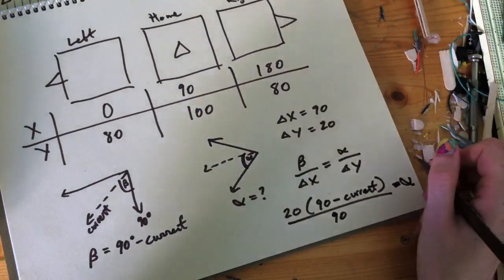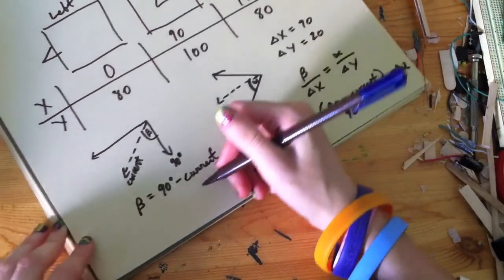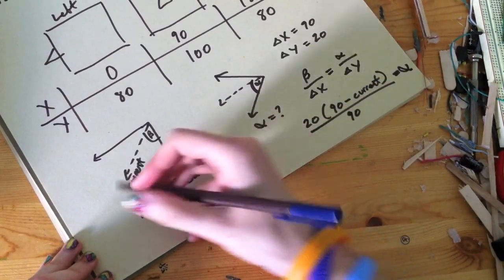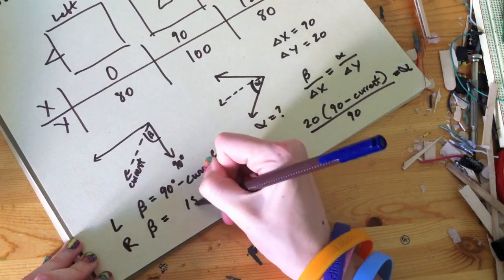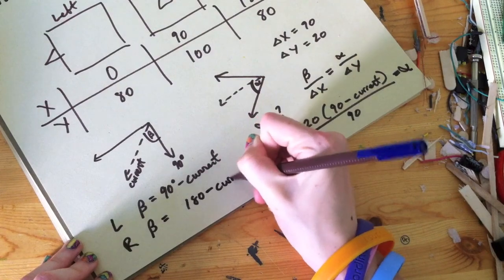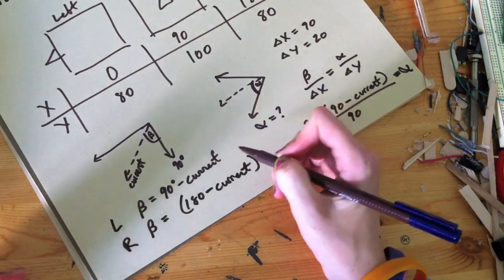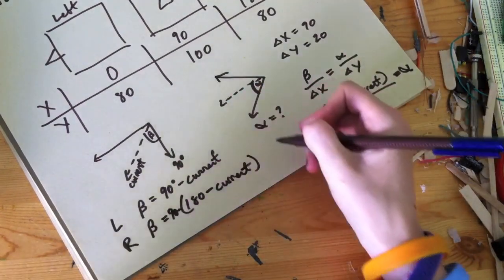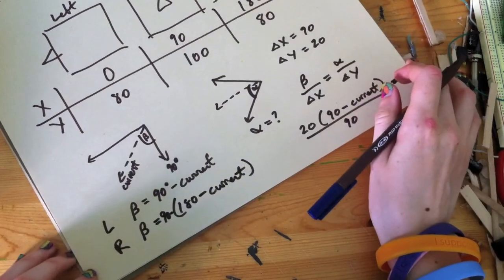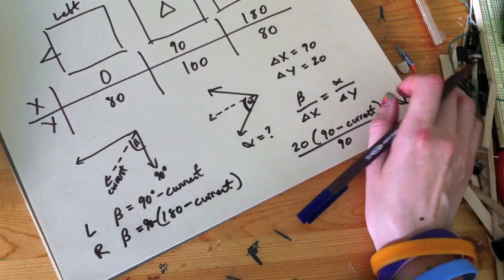The only thing that changes for the right side is that instead of beta being 90 minus current, then for the right side, the beta would be 180 minus current, but then we still want it to be on the scale of 0 to 90, so then we just subtract 90 from this number here. And that's all that changes for the right side. Everything else is the same.